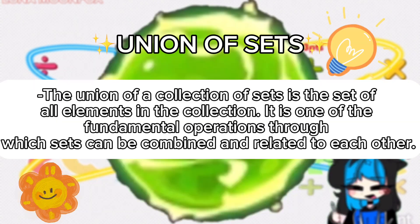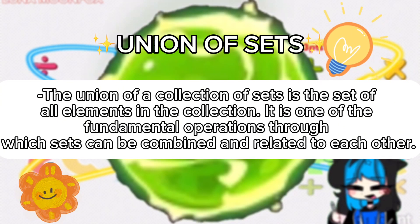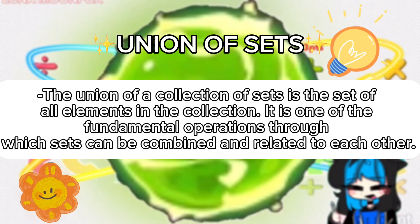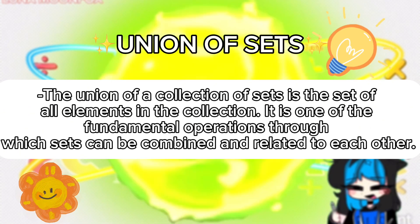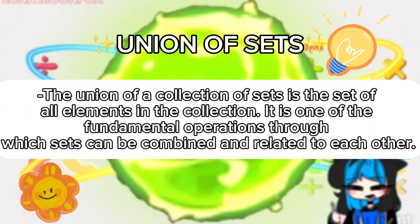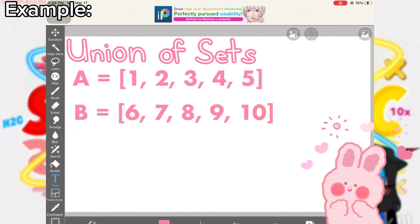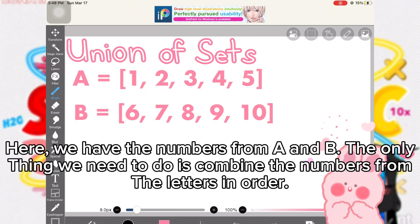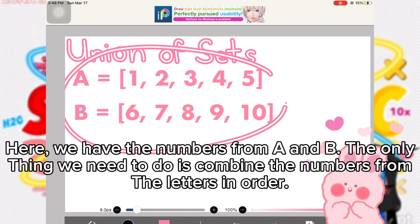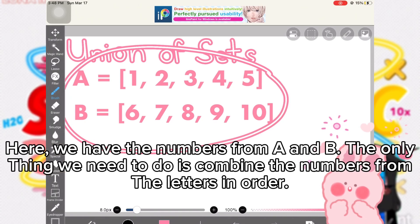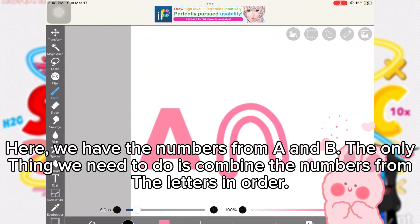First we will be learning how to solve the union of sets. The union of a collection of sets is the set of all elements in the collection. It is one of the fundamental operations through which sets can be combined and related to each other. In the example, we have the numbers from A and B — the only thing we need to do is combine the numbers from the sets in order.